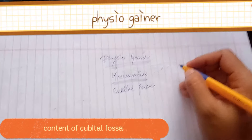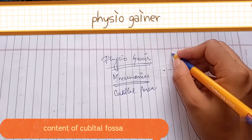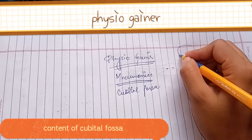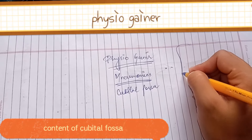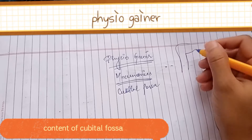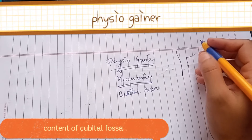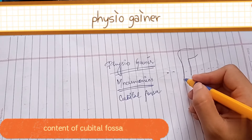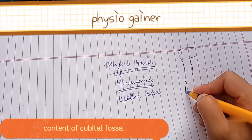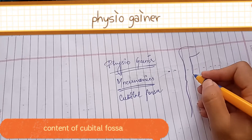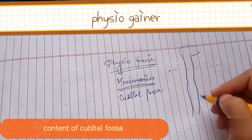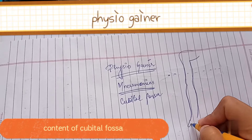Let me explain the anatomy. So this is your elbow — sorry — shoulder here, and we are going to go to the elbow and then the fingers.